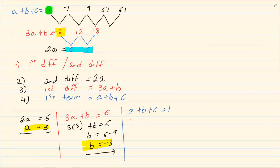So we are simply going to substitute. 3 minus 3 plus c is equal to 1. Now we solve for c. So I have that c is equal to 1.